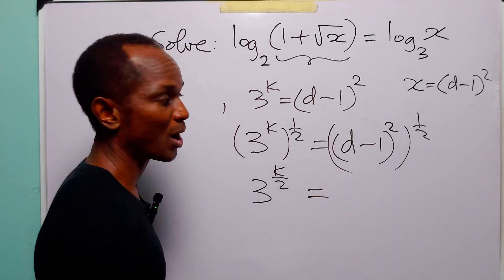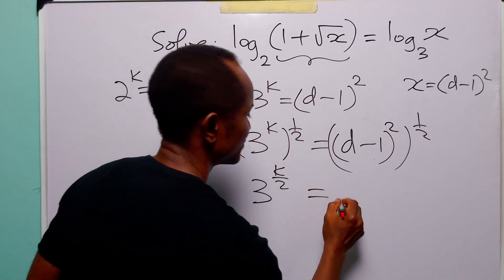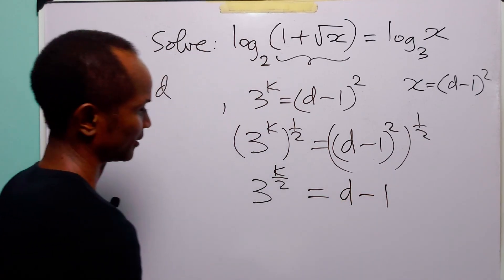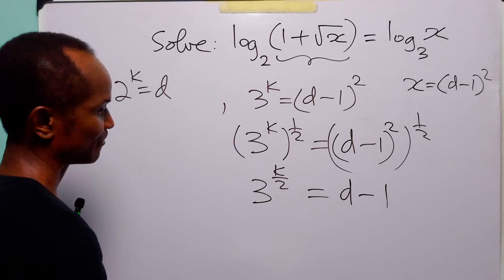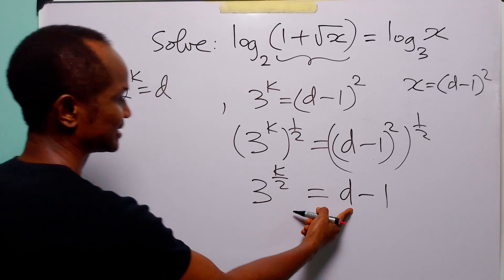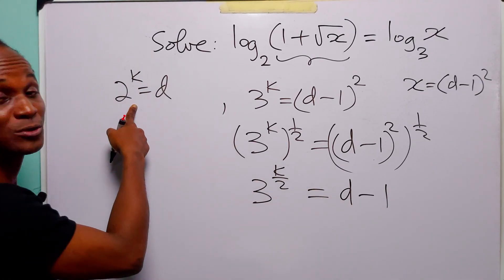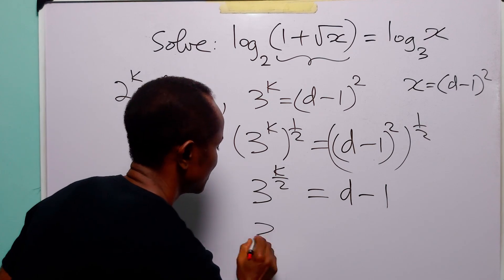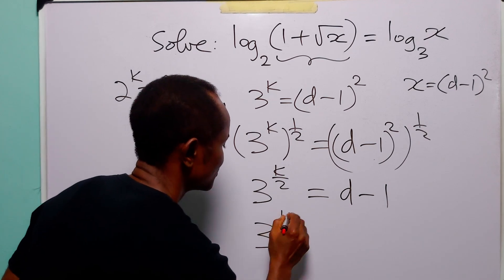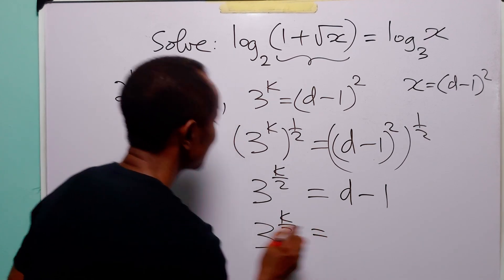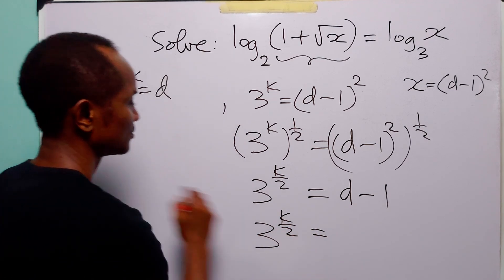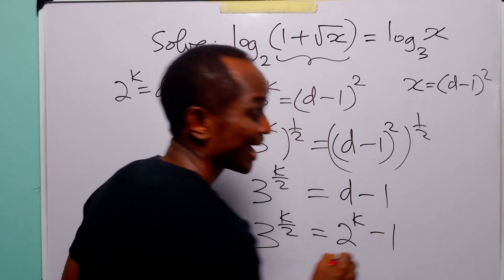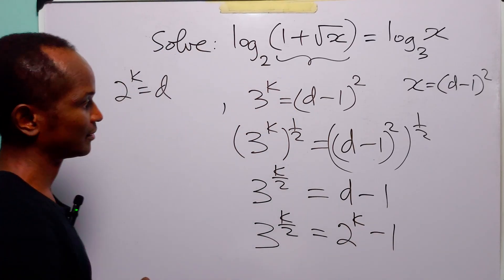Likewise, we multiply the two powers: two times one half is equal to one, so here we simply have d minus one. But let us remember that d is equal to two to the power k, so we have three to the power k over two is equal to two to the power k minus one.